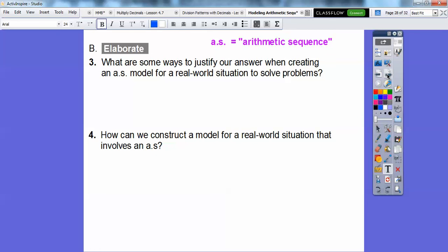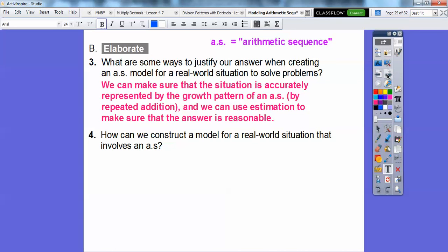Here's the other two questions. What are some ways to justify our answer when creating an arithmetic sequence model for a real world situation to solve problems? We can make sure that the situation is accurately represented by the growth pattern of an arithmetic sequence, where it just keeps adding the same amount, so plus 57, plus 57, and so on. And we can use estimating, like we did in that last one, to make sure that our answer is reasonable. So you can do a quick estimation job and see if it's reasonable. Those are a couple of ways we can justify our answer.